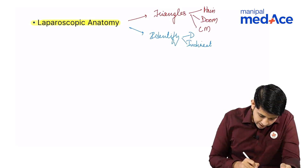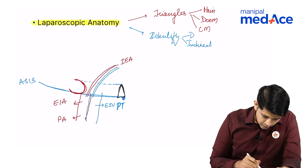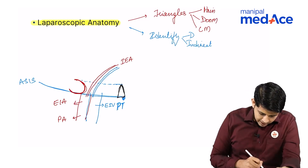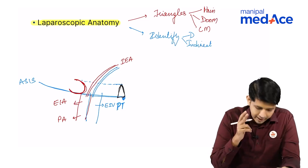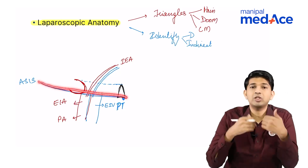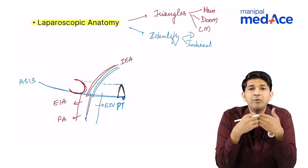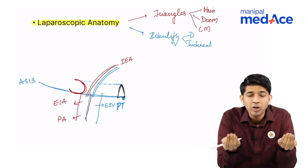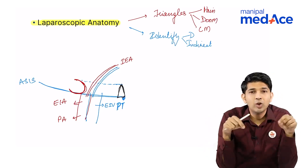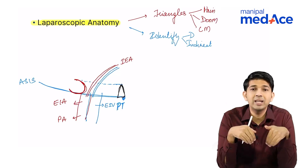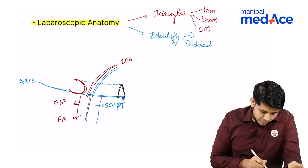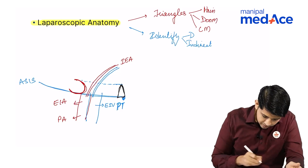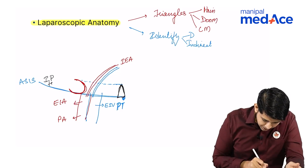Let us revisit the image we have drawn and assume we are seeing it from the inside. When seeing from the inside, this inguinal ligament is a structure on the outside — you cannot see it from the inside, but you can see an impression which corresponds to the inguinal ligament. So you cannot call it the inguinal ligament when seeing from the inside; instead, you are going to call it the iliopubic tract. The same line is called the iliopubic tract.